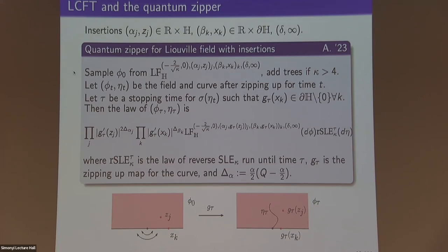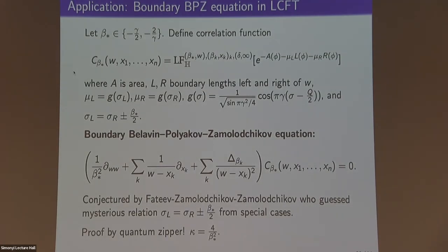Liouville conformal field theory gives surfaces which behave nicely under the quantum zipper in the sense that the law of the curve and the law of the field after zipping are tractable. I want to use this quantum zipper to give a result in LCFT. We fix a special choice of beta* which is either -gamma/2 or -2/gamma. We define a correlation function with boundary insertions at points x_1 through x_n of sizes beta_1 through beta_n, an insertion at point w of size beta*, and possibly an insertion at infinity. The correlation function encodes the law of the area and boundary lengths of the Liouville field.